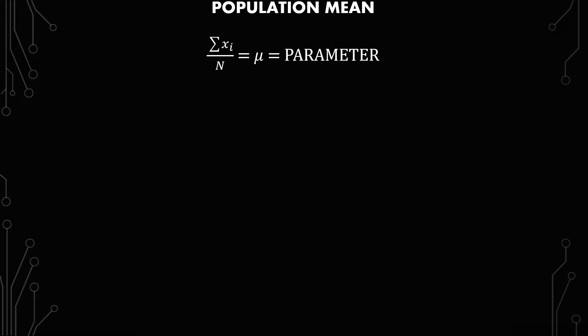We have the formula at the top. It's the summation of xi over n equals mu, which is a parameter. Now, a parameter is something that is true. It's not an approximation. It's not something you're guessing at.